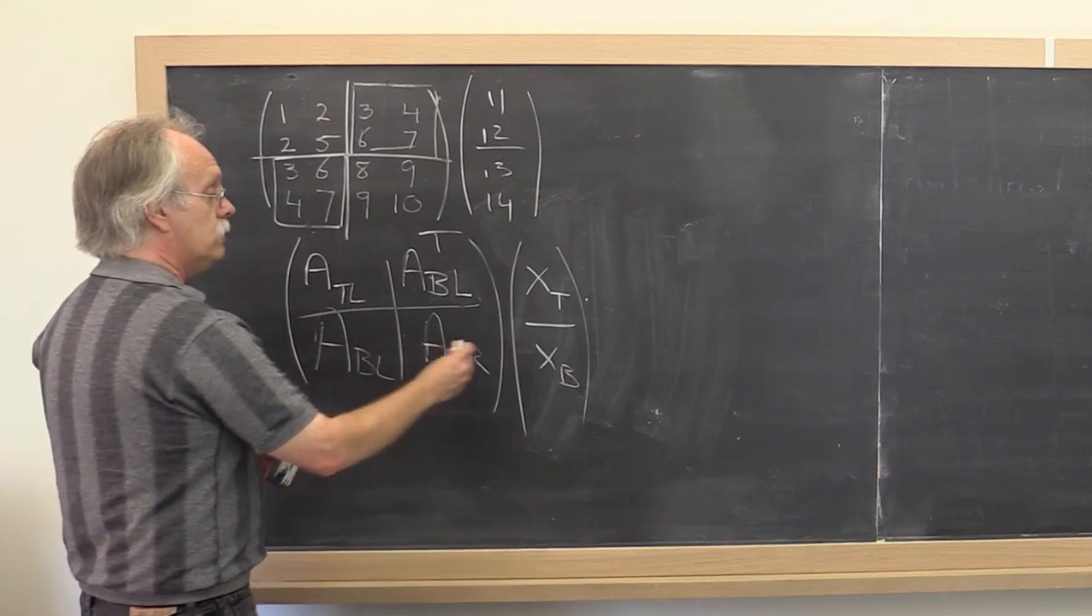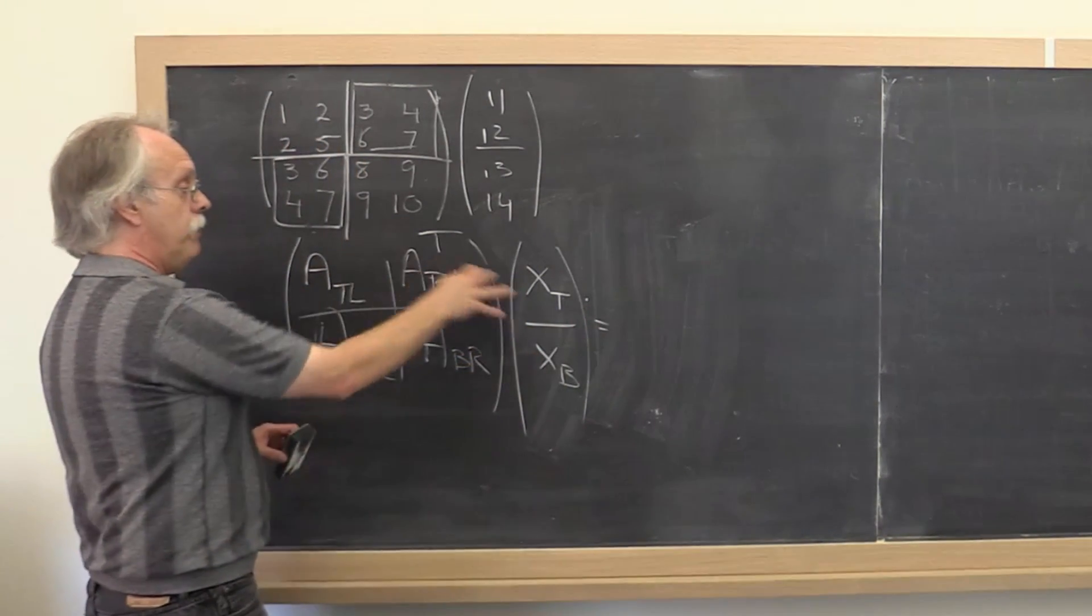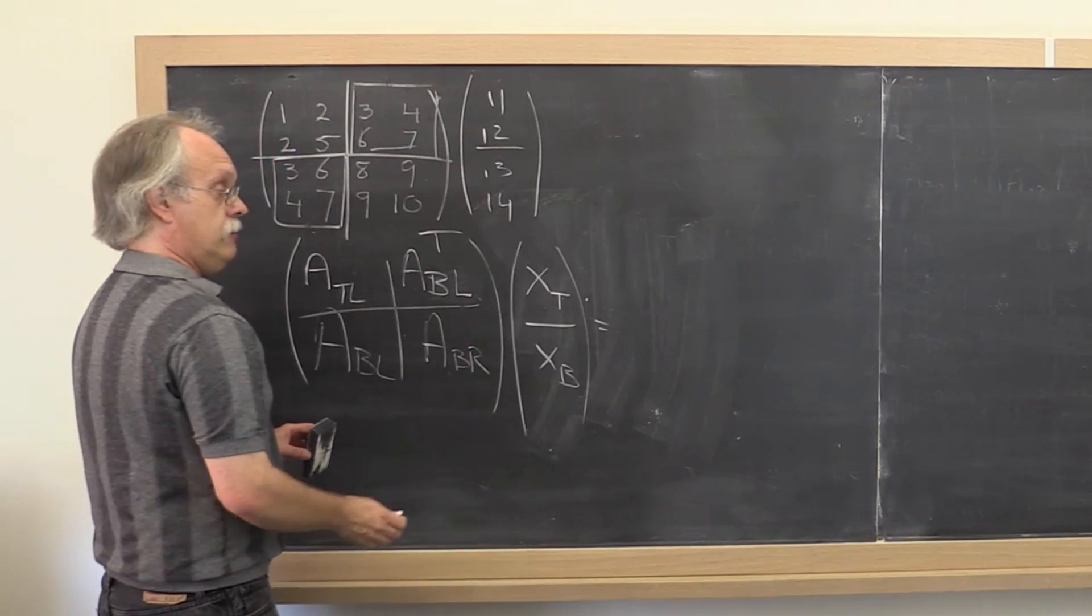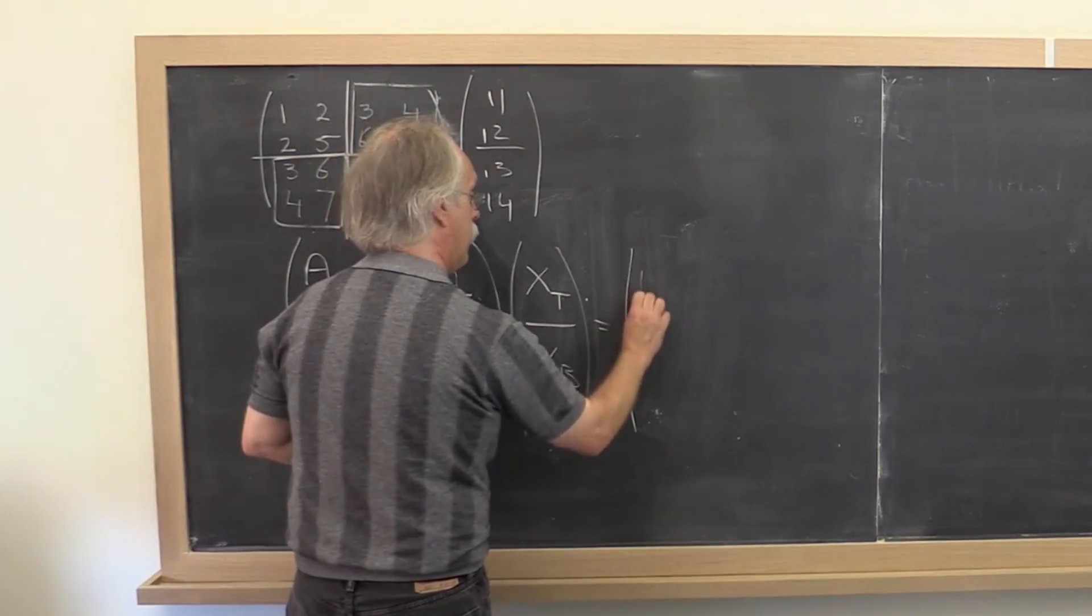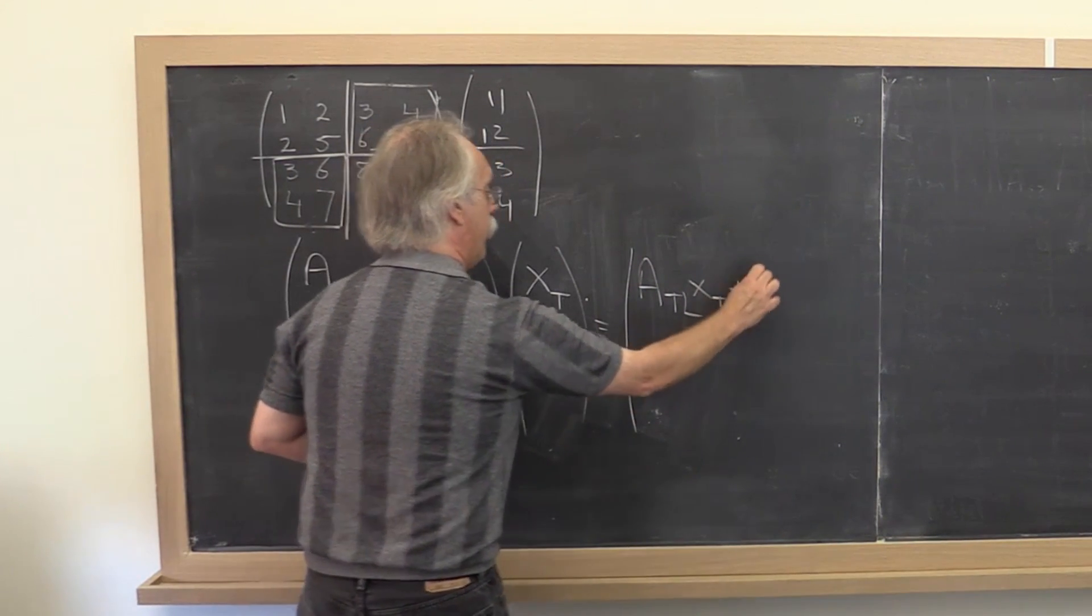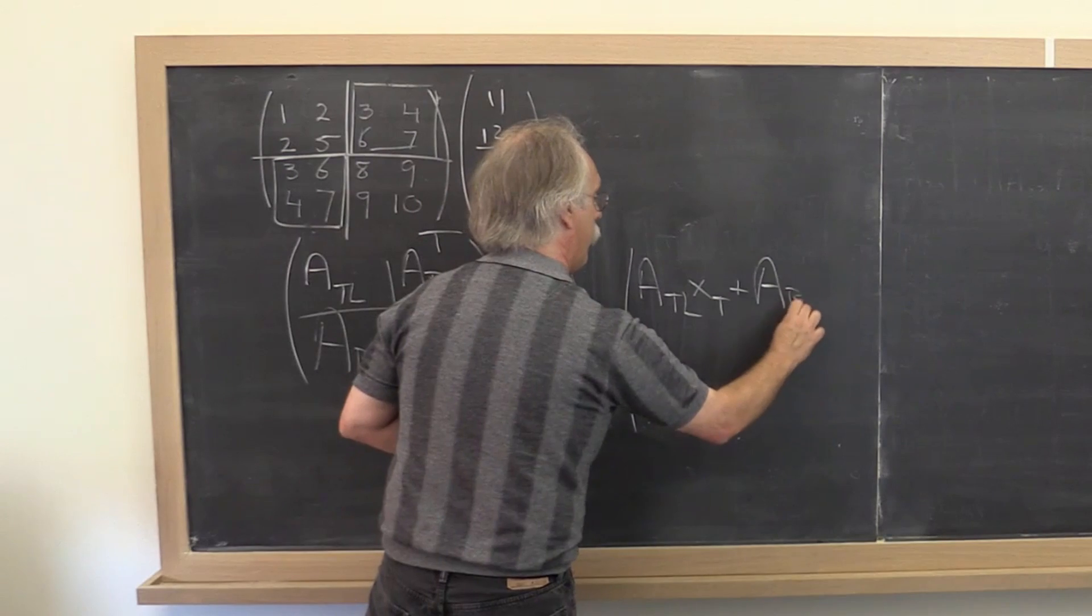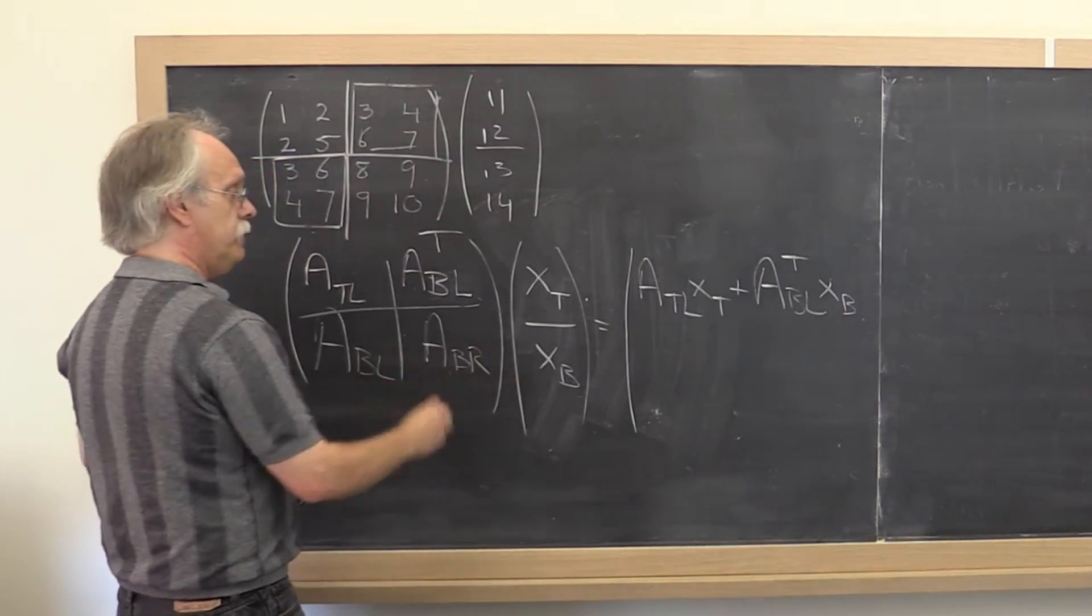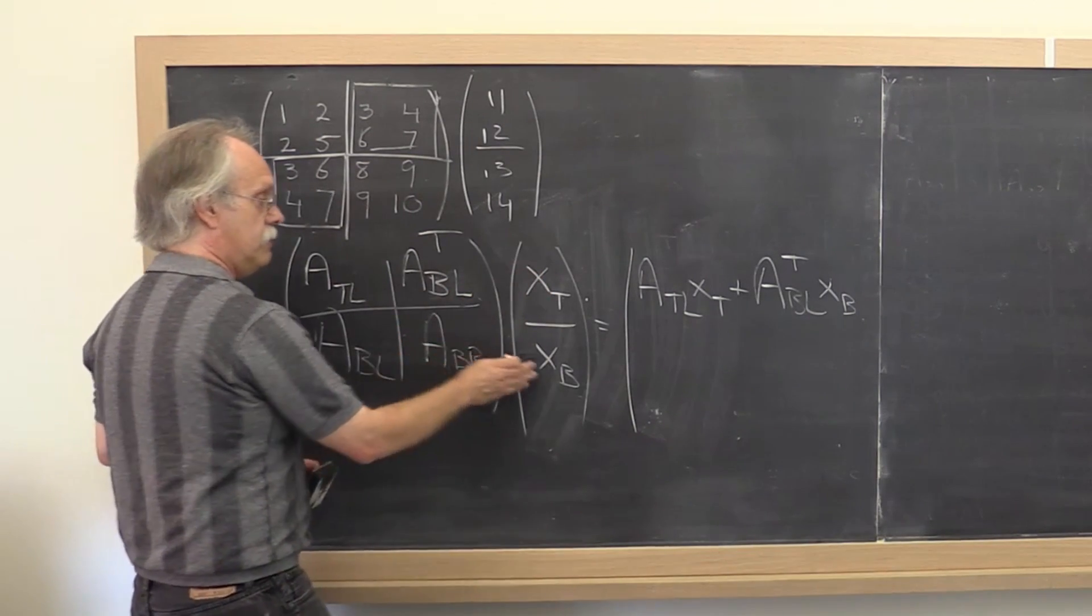And then if you work it out, the top part of the result is this times that plus this times that, and the bottom part of the result is this times that plus this times that.